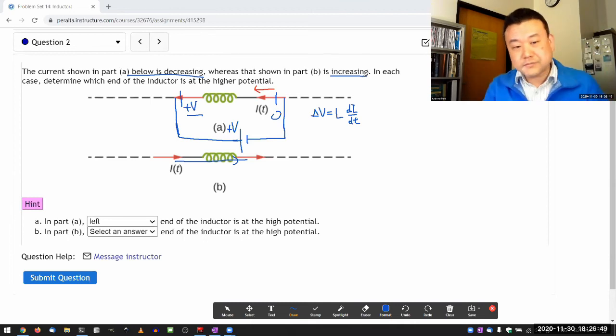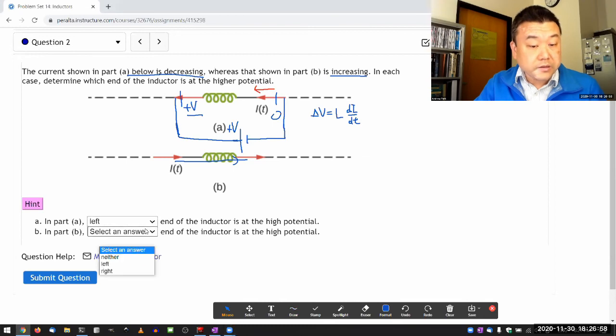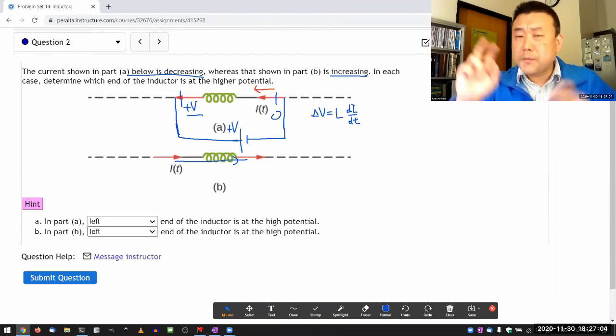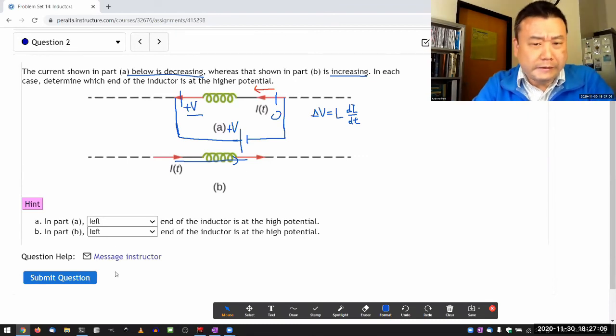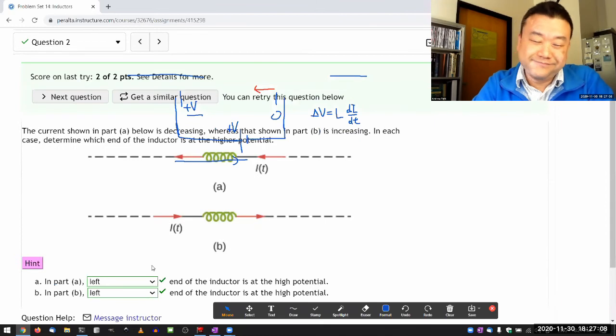So if I went through the same reasoning process, I think I'm going to end up saying that the left-hand of the inductor is at the higher potential. So let me put left here, and let's see if my common sense reasoning is correct or not. Correct.